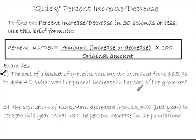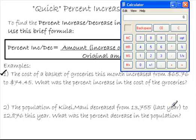All right, let's get our calculator in here. So I've got $74.45. Let's put that in there, and we're going to subtract $65.76. And that's equal to $8.69.